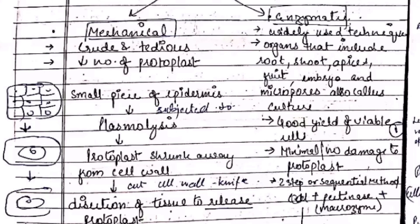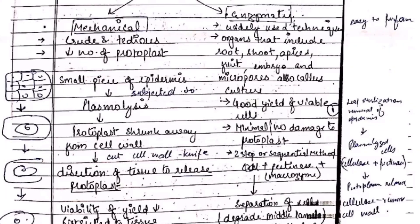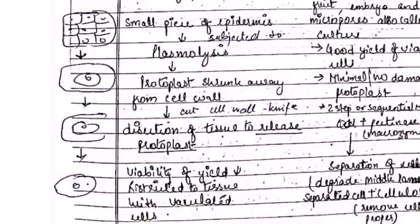In the mechanical method, a small piece of epidermis is subjected to plasmolysis, causing the protoplast to shrink away from the cell wall. The cell wall is then cut with a knife such that only cell walls are cut, and undamaged protoplasts in the strips are released by osmotic swelling when placed in a low-concentration sucrose solution. Plasmolysis means the cytoplasm pulls away from the cell wall due to loss of water through osmosis. A diagram shows the knife cutting the cell wall to release the protoplast.